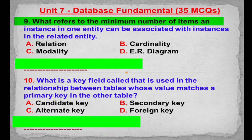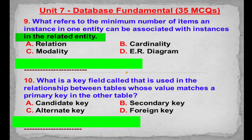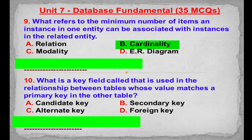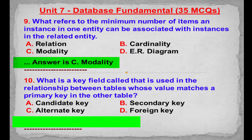MCQ number 9: What refers to the minimum number of instances in one entity that can be associated with instances in the related entity? Option A: Relation. Option B: Cardinality. Option C: Modality. Option D: ER Diagram. Correct answer is Option C: Modality.